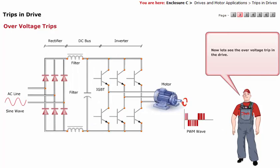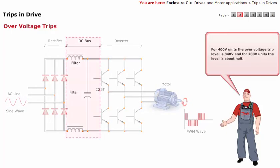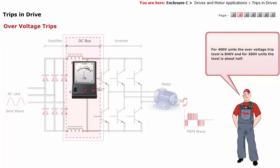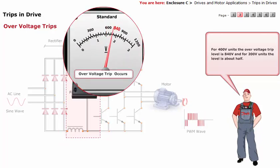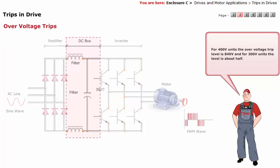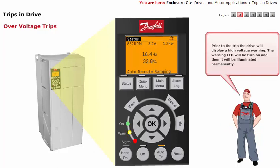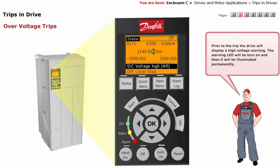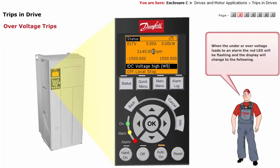Now let's see the over voltage trip in the drive. For 400 volt units, the over voltage trip level is 840 volts, and for 200 volt units the level is about half. Prior to the trip, the drive will display a high voltage warning. The warning LED will be turned on and then illuminated permanently. When the under or over voltage leads to an alarm, the red LED will be flashing and the display will change accordingly.